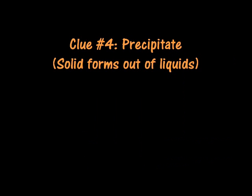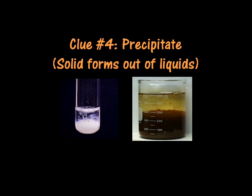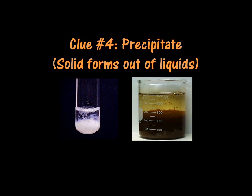The last clue is a new one called a precipitate. A precipitate is what you get when two liquids are mixed together and a solid is formed. You wouldn't expect that to happen. When a solid forms when you mix two liquids together, that is a sign that a new substance is being created — that's a sign of a chemical change.